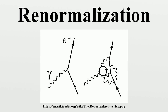The Abraham-Lorentz theory had a non-causal pre-acceleration — sometimes an electron would start moving before the force is applied — which is a sign that the point limit is inconsistent. The trouble was worse in classical field theory than in quantum field theory, because in quantum field theory a charged particle experiences Zitterbewegung due to interference with virtual particle-antiparticle pairs, thus effectively smearing out the charge over a region comparable to the Compton wavelength. In quantum electrodynamics at small coupling, the electromagnetic mass only diverges as the logarithm of the radius of the particle.